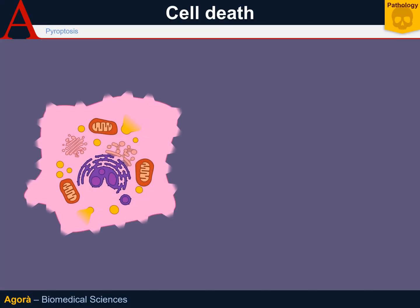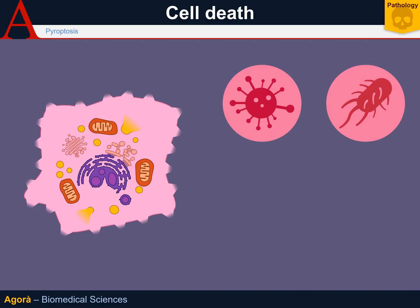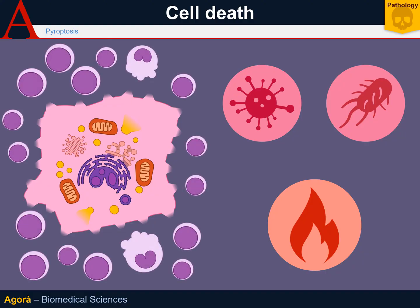Pyroptosis literally means 'falling flames.' It is a type of death occurring especially during viral infections and bacterial intracellular infections. The main characteristic of pyroptosis is a large number of inflammatory cells involved, whose aim seems to be that of triggering the general immune system.